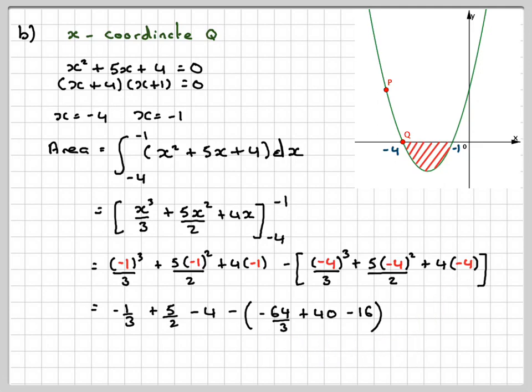We'll now remove this bracket. So it's minus 1 third, plus 5 over 2, minus 4, plus 64 over 3, minus 40, plus 16. So making sure you change all the signs there.